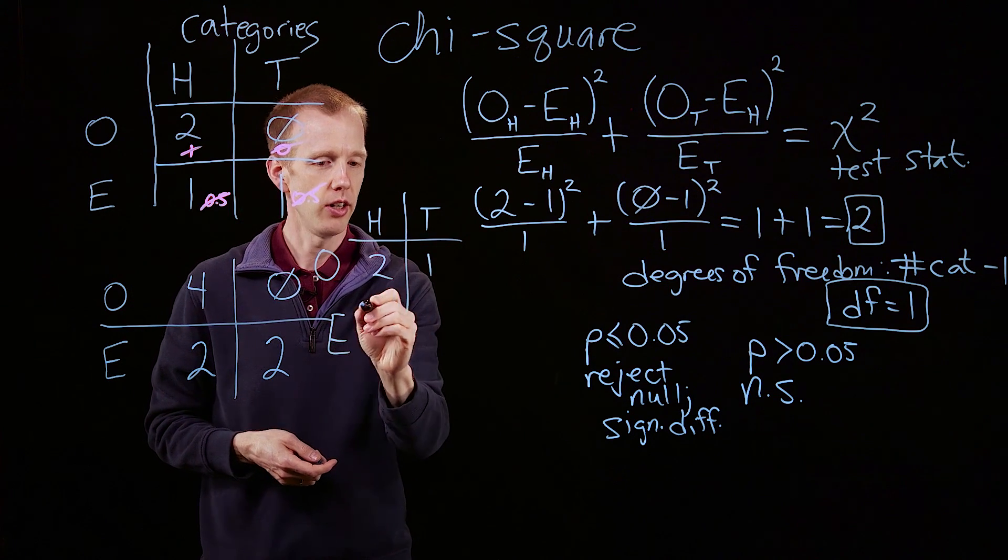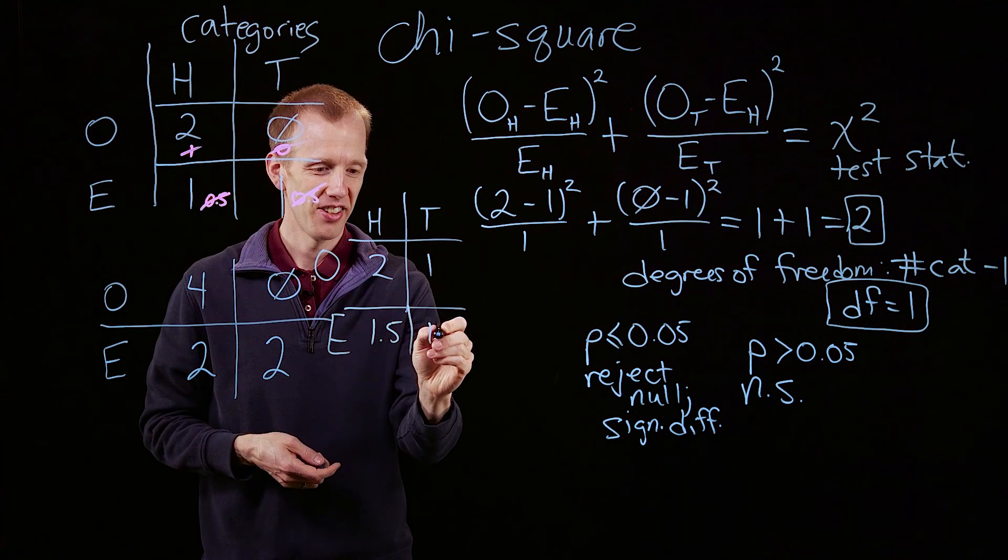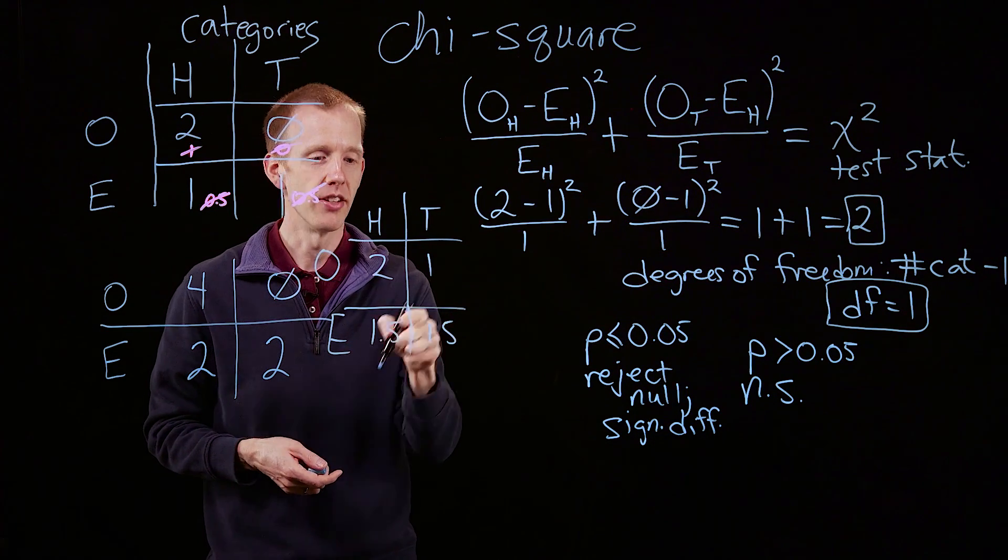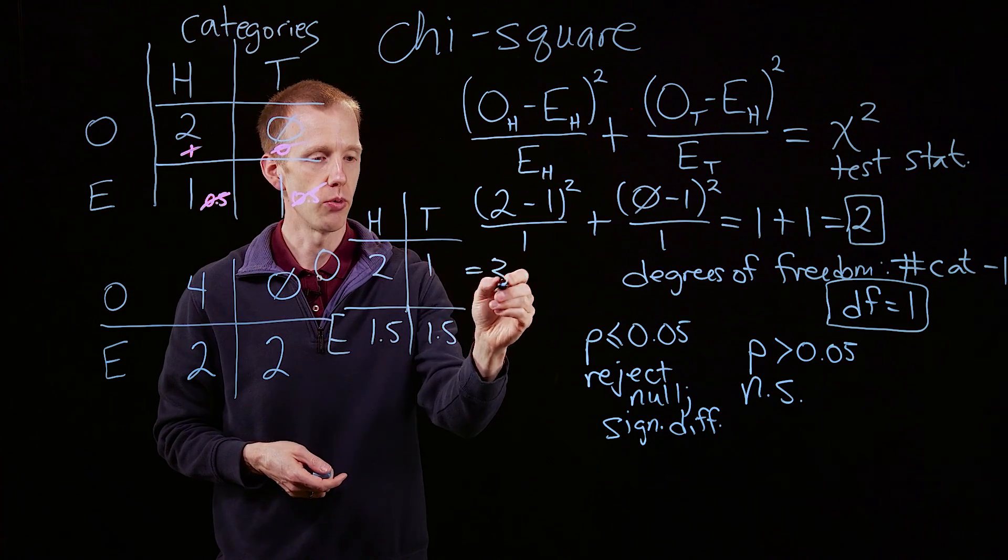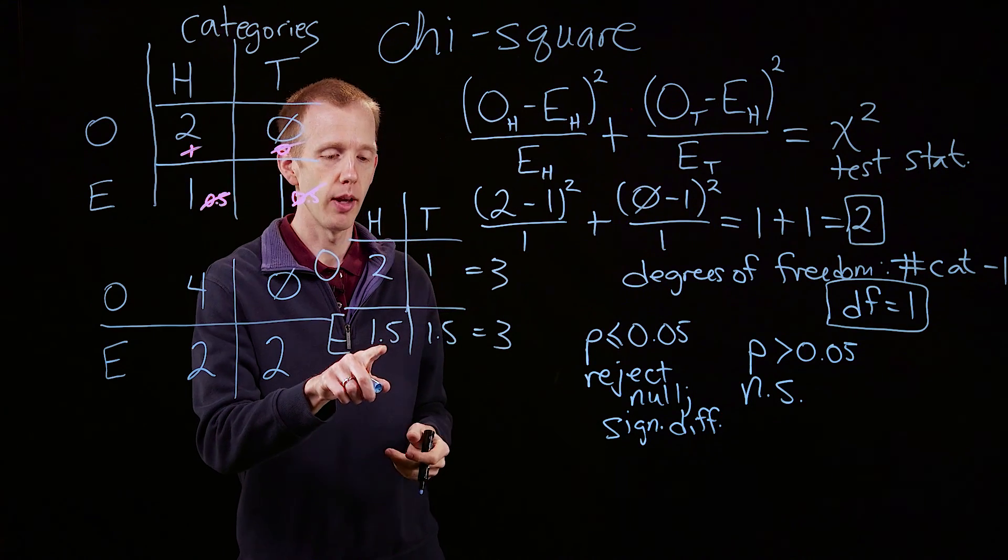So what's the expectation here? The expectation is that we would see one and a half heads and one and a half tails, because each of these rows has to sum to three, and we've got a 50-50 chance of getting a heads flip or a tails flip.